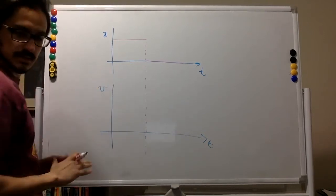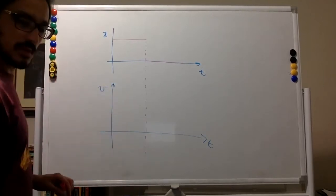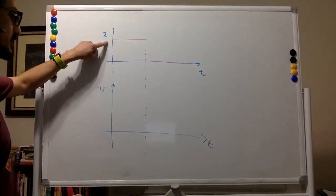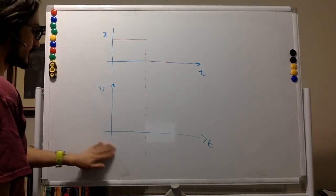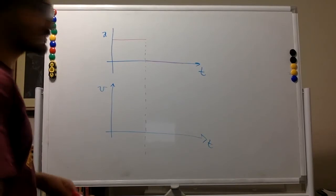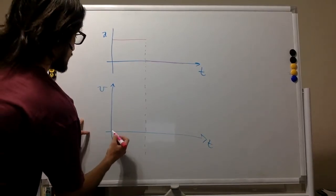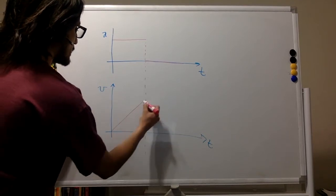Well, if the acceleration is constant and we're assuming that he starts from zero velocity because he's doing the 100 meter dash, the velocity is going to be a straight line.